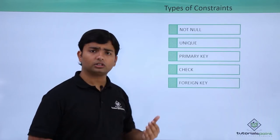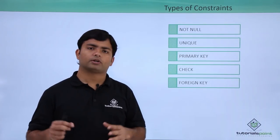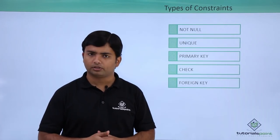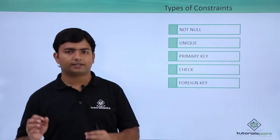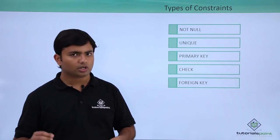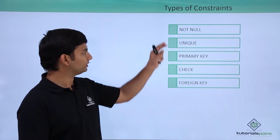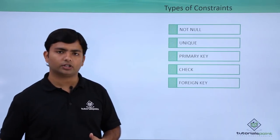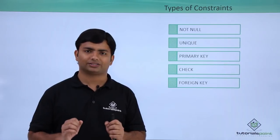NOT NULL constraint is something which will ensure on a particular column it will never accept a null value. For example, if I have an employees table, they must have a name. So on the column called first name, I can simply pass this NOT NULL constraint so that every time you are entering a new record, you must pass a name.